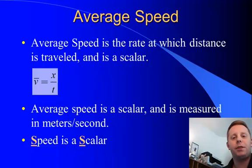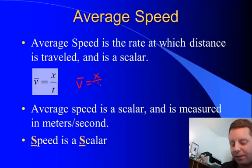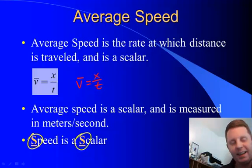Now sometimes it's also important to know how long it takes you to travel a distance. We call that the average speed. That's the rate at which distance is traveled, and it's a scalar. We denote that V̄ for speed. V stands for speed, and the line over it means it's an average speed. That's equal to the distance traveled divided by time. It's a scalar, and it's measured in units of meters per second. The way I remember speed is a scalar: S and S.